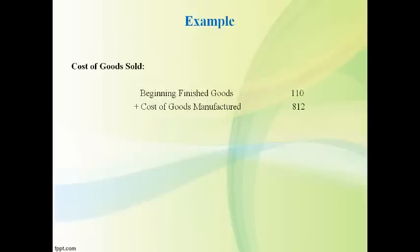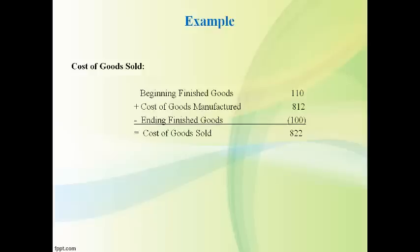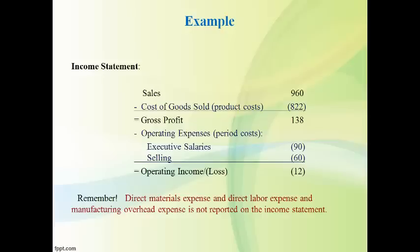The products available to sell at the beginning of the period are added to the products made during the period to get the total amount of goods that could have been sold. Subtract the goods that are left to get the cost of goods that were sold. Cost of goods sold, which includes all the product costs in products sold during the period, is reported on the income statement. Period costs are reported as operating expenses in the period incurred. It is important to remember that direct materials is reported on the balance sheet when purchased, and there is no direct labor or manufacturing overhead reported separately on the income statement — all product costs are included in the one line item: cost of goods sold.